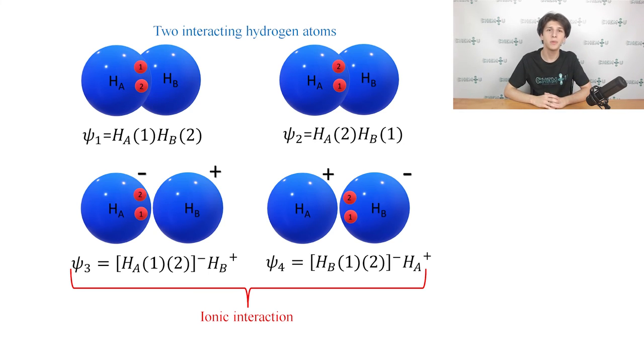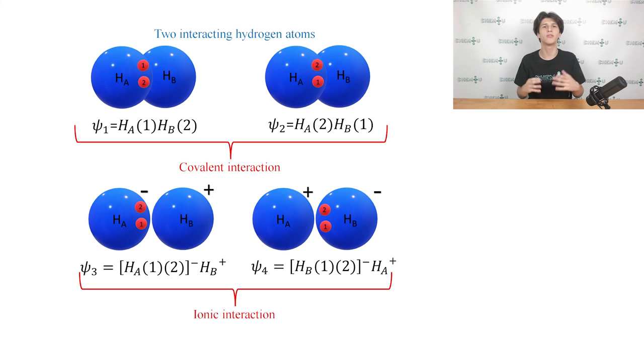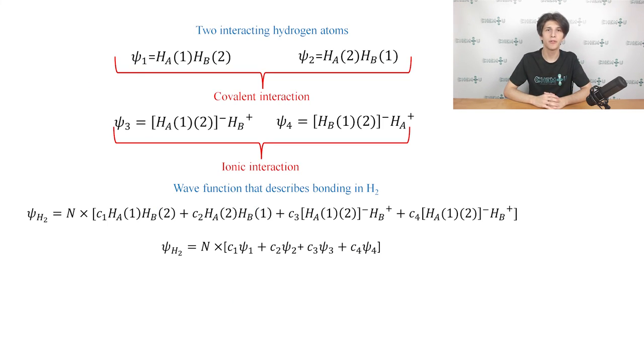Of course, both atoms A and B are in reality indistinguishable. That is why we can make atom B an anion and atom A a cation, just as shown on the slide here. Both highlighted structures are equally probable, and they represent an ionic interaction. The first situation can be described by the wave function ψ3, and the second one by the wave function ψ4. Up until now, we have formulated the four wave functions that can describe the bonding in a hydrogen molecule. The wave functions ψ1 and ψ2 describe covalent bonding, while functions ψ3 and ψ4 describe ionic bonding. As usual, we will first multiply each wave function by a factor denoted as c, and then we will make a linear combination from the resulting terms, as you can see on the screen now.